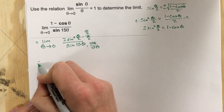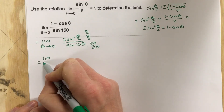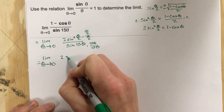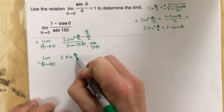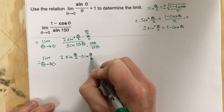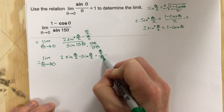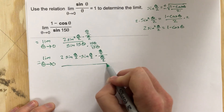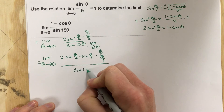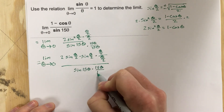So let's work it out. As theta approaches 0 we have 2 times sine theta over 2 times sine theta over 2, times theta over 2 over theta over 2, all over sine 15 theta times 15 theta over 15 theta.